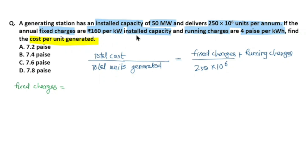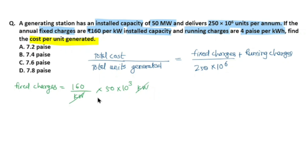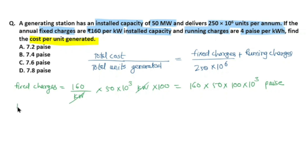Fixed charges = rupees 160 per kilowatt installed capacity. We multiply by 50 megawatt (i.e., 50×10³ kilowatt), so kilowatt cancels. Fixed charges = 160 × 50 × 10³ rupees, which in paise becomes 160 × 50 × 100 × 10³ paise.